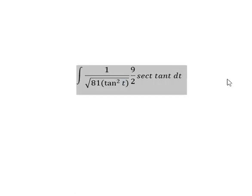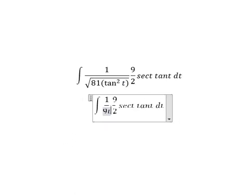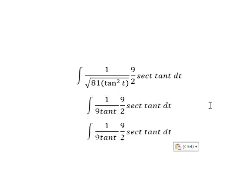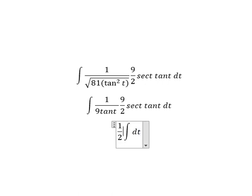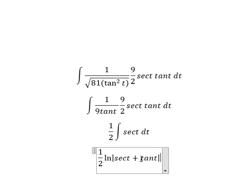And now we have 9 tan t. Now we need to simplify 9 tan t in here. We just have 1/2 secant of t, the integration of secant t plus tan t.